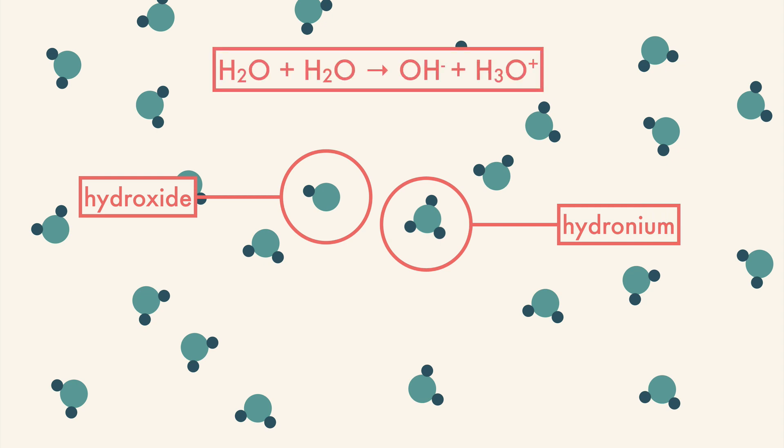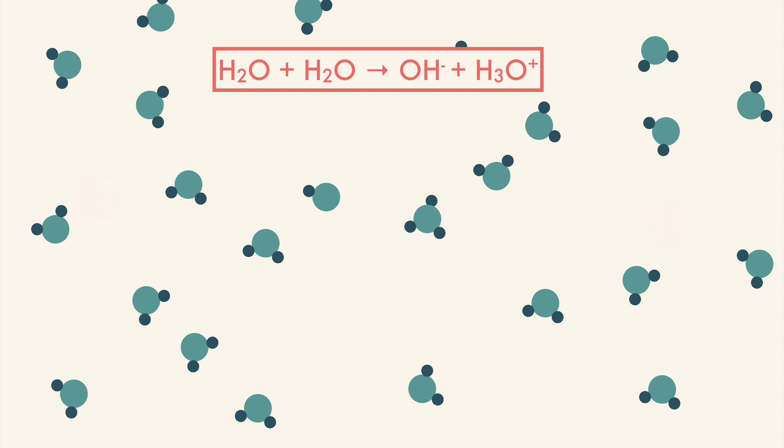The equation for the reaction looks like this: H2O + H2O ⇌ OH- + H3O+. But this isn't the whole story. The hydroxide and hydronium are attracted to each other by their charge and can react to create two water molecules.